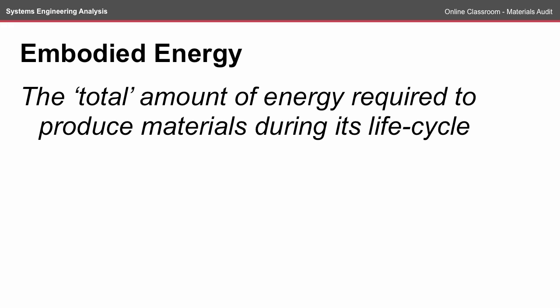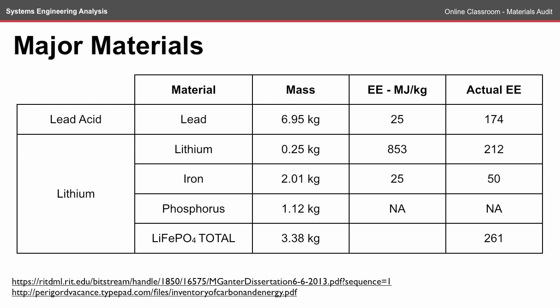Embodied energy is the total amount of energy required to produce materials during its life cycle. Many embodied energy data sets are not in the public domain and all require practical experiments, so we'll do our best to compare our major materials with the data that we can find. In a lead acid battery, the primary material is lead at a mass of 6.95 kilograms. The embodied energy has been measured at 25 megajoules per kilogram, which for 6.95 kilograms comes out at about 174 megajoules.